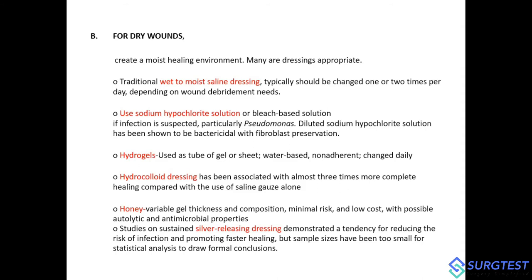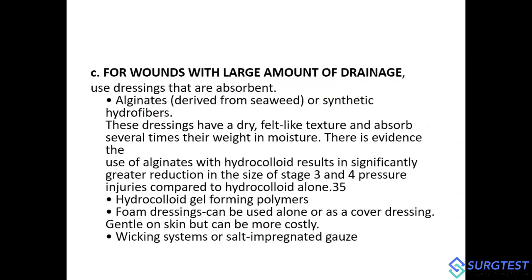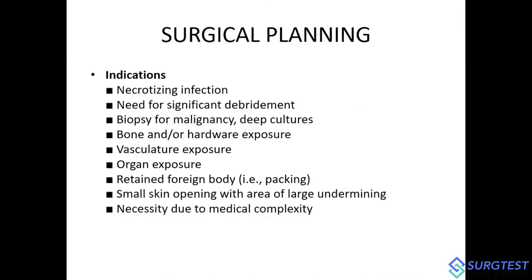Silver-releasing dressings have demonstrated a tendency to reduce infection risk and promote healing, though clinical analyses are not conclusive. For wounds with large amounts of drainage or slough, absorbent dressings are used — including alginate dressings derived from seaweed, hydrocolloid gels, foam dressings, and wicking systems. Negative pressure wound therapy creates a good environment and provides continuous suction of slough, promoting wound healing.